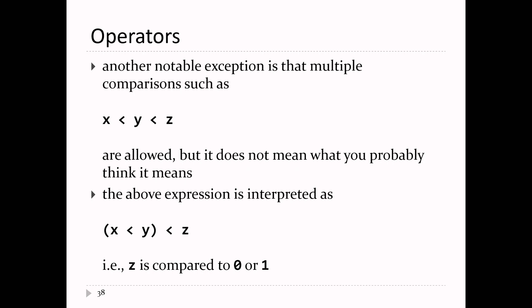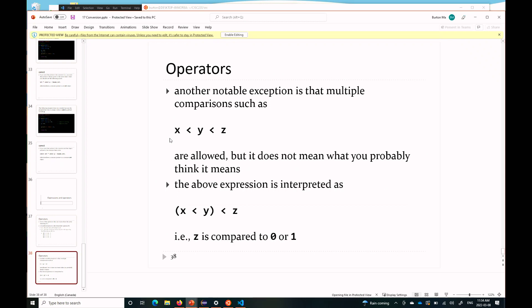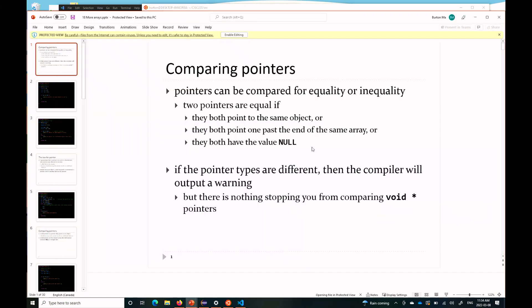In C, X < Y < Z first evaluates 'is X less than Y?' giving 0 or 1, then checks 'is 0 or 1 less than Z?' — which is not what you intended. So in C, if you want X < Y and Y < Z, you write X < Y && Y < Z, the same way you'd write it in Java. Other than those two exceptions, operators work the same in C and Java.